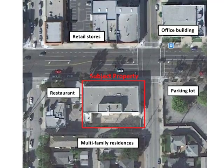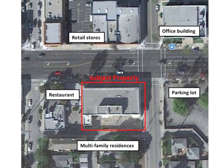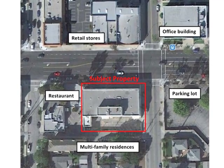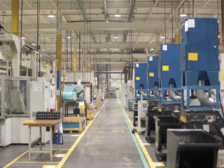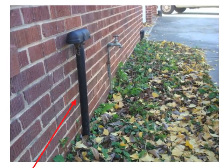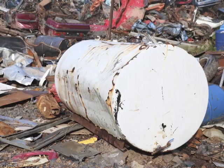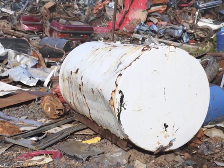The inspection also includes observing adjacent and nearby properties. Environmentally sensitive operations can include gas stations, dry cleaners, industrial facilities, residential heating oil tanks, and illegal dumping at abandoned properties.